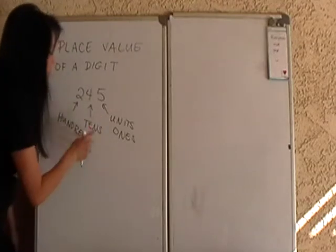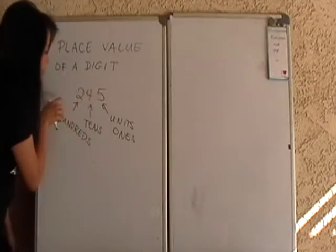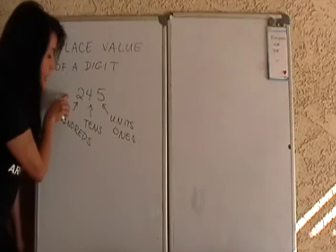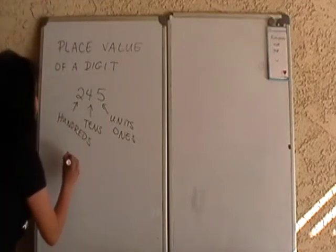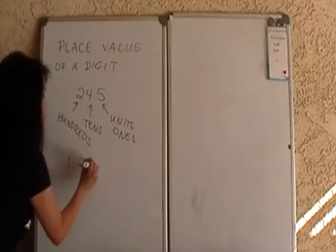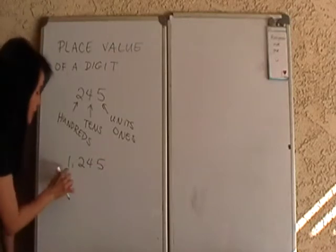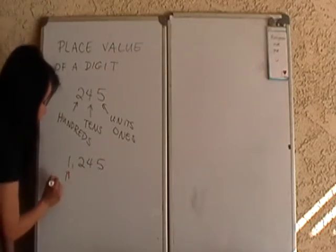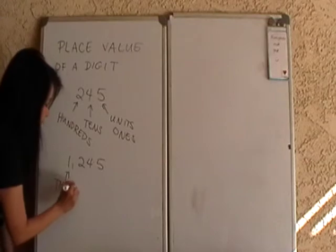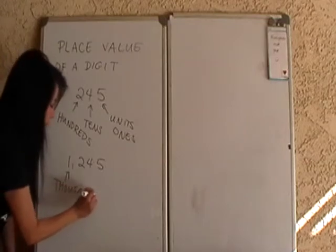For a three-digit number, you know this is the units, the tens, and the hundreds. So if I make it, let's say, 1,245, then this number here, 1 occupies what you call the thousands place.